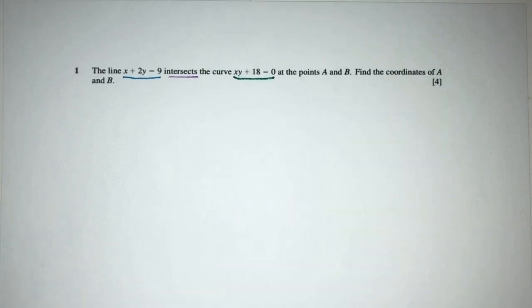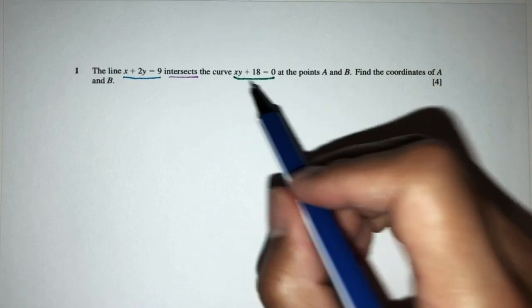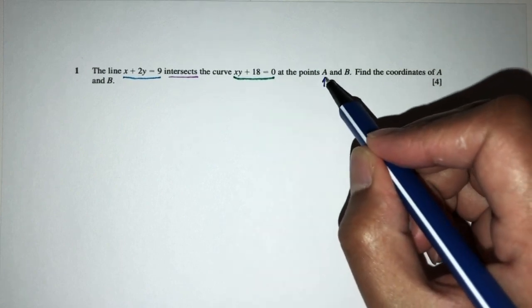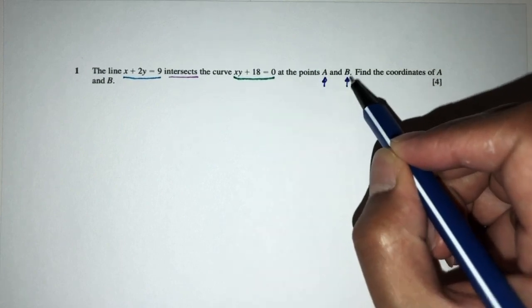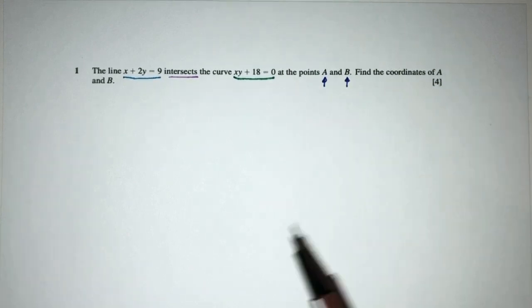Now it meets the curve at two points. We have point A and point B. These are the points of intersection. Now, find the coordinates of A and B. So, pretty easy.